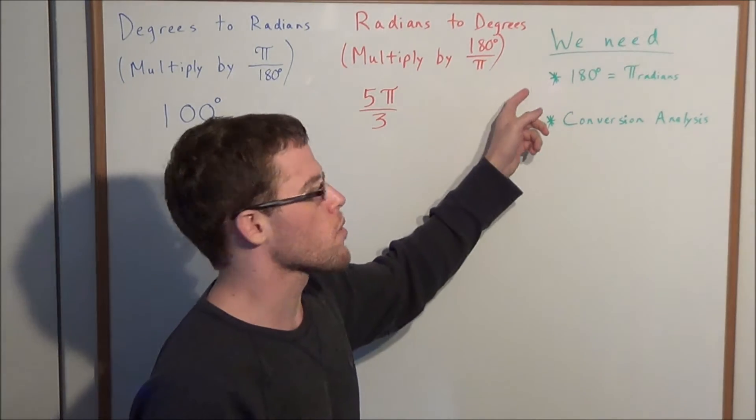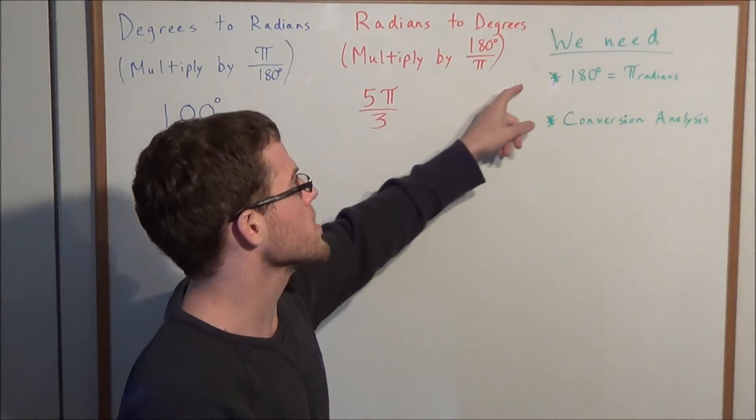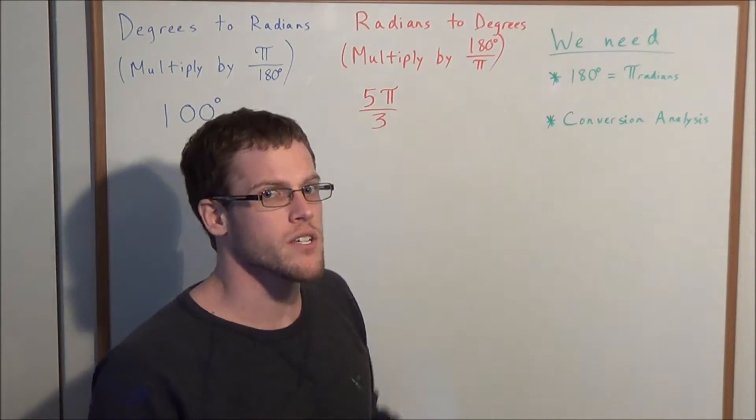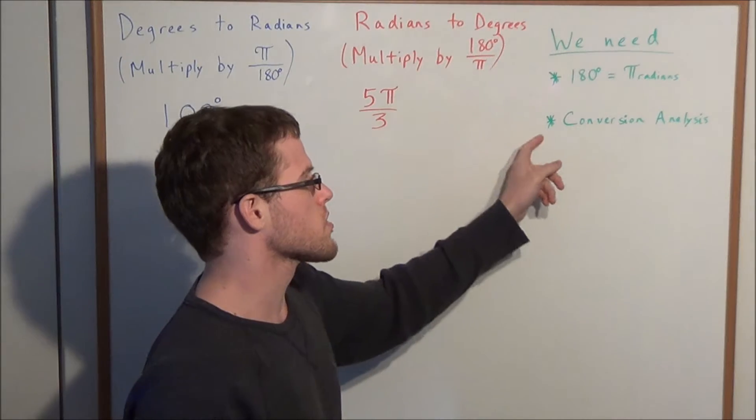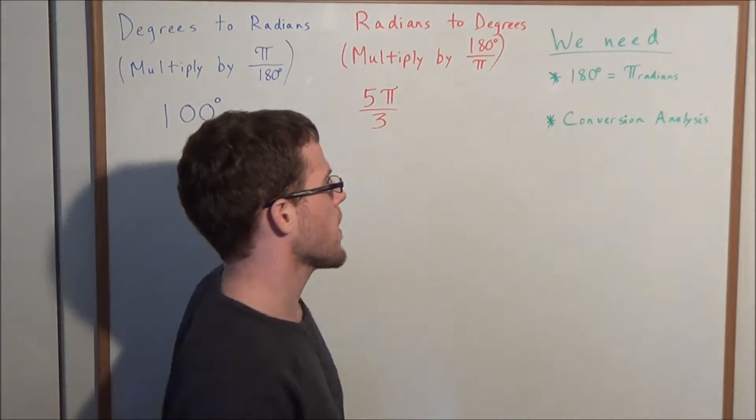Before we begin, let's look at what we're going to need to solve this problem. We need the fact that 180 degrees equals π radians, and we're going to use conversion analysis with this fact.